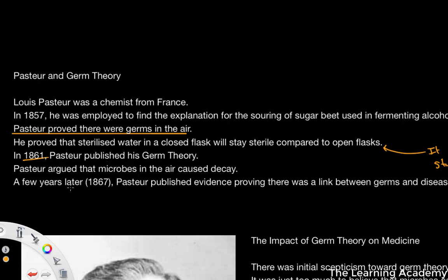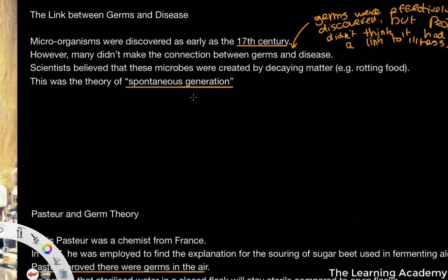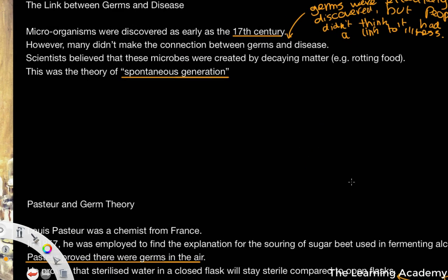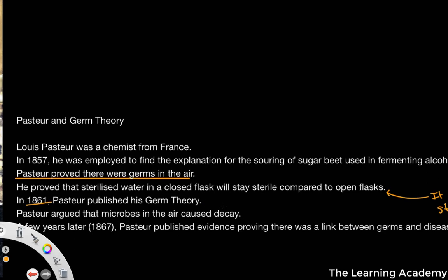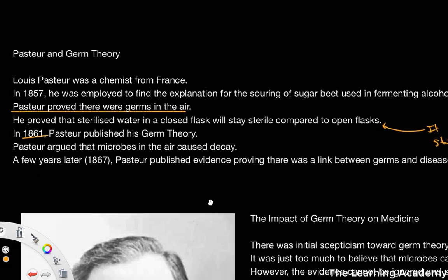He argued that microbes in the air cause the decay. Rather than decay causing microbes in the air, he proved that it was the microbes in the air that caused the decay. So really, what they got wrong with the spontaneous generation theory was that they just got it the wrong way around — they thought decaying matter created these microbes, but he proved that it was the germs that created the decay.